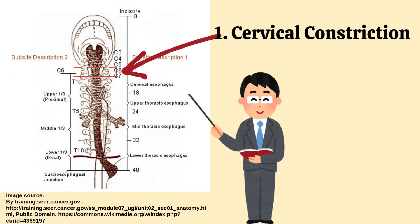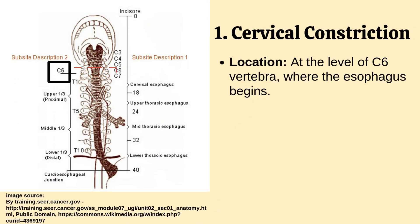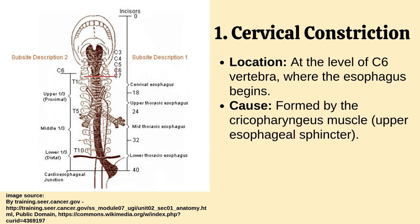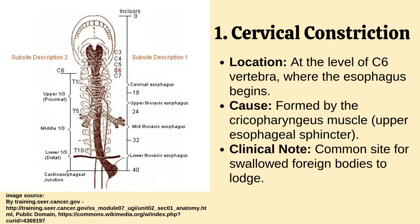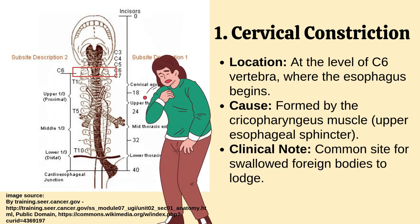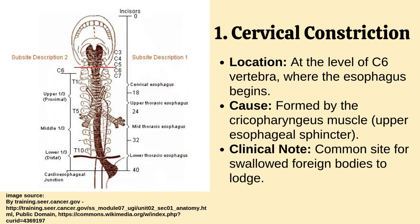Number 1: Cervical constriction. It is located at the level of C6 vertebra, where the esophagus begins. It is formed by the cricopharyngeus muscle, the upper esophageal sphincter. Clinical note: it is the common site for swallowed foreign bodies to lodge.